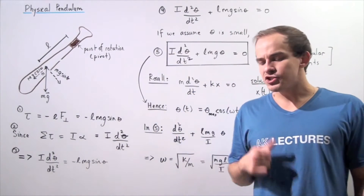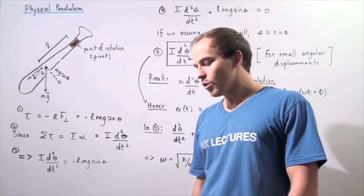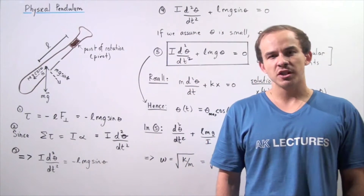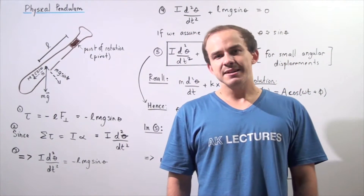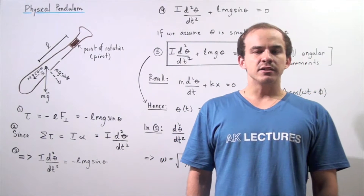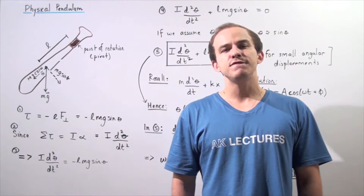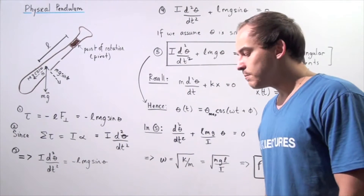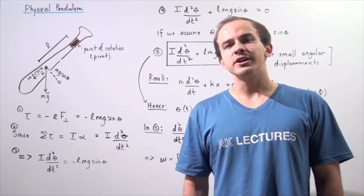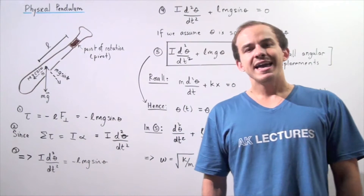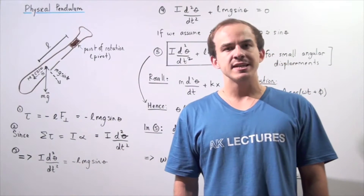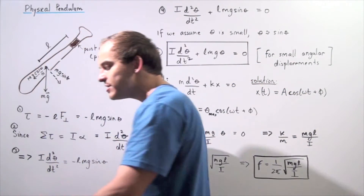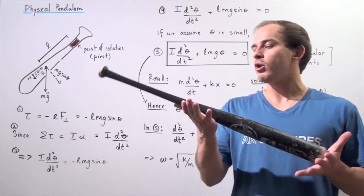As of now, the only type of pendulum system we spoke about was a simple pendulum. We said that a simple pendulum can experience simple harmonic motion only when the angular displacement is assumed to be very small. Now let's discuss what a physical pendulum is and explore whether or not a physical pendulum is capable of experiencing simple harmonic motion. One example of a physical pendulum is a swinging baseball bat.